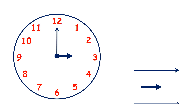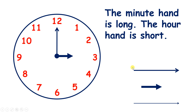On a clock you usually have three hands — these lines with arrows on a clock we call hands. The minute hand is long and the hour hand is short. You can remember that the minute hand is long because 'minute' is a long word with six letters, and the hour hand is short because 'hour' is a short word with only four letters.